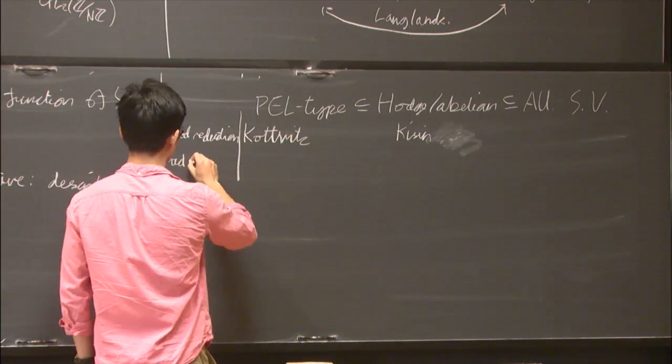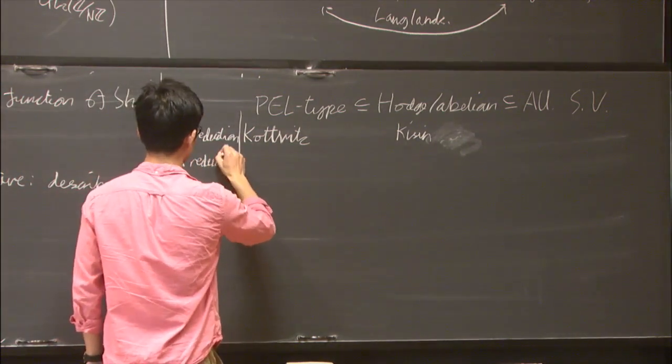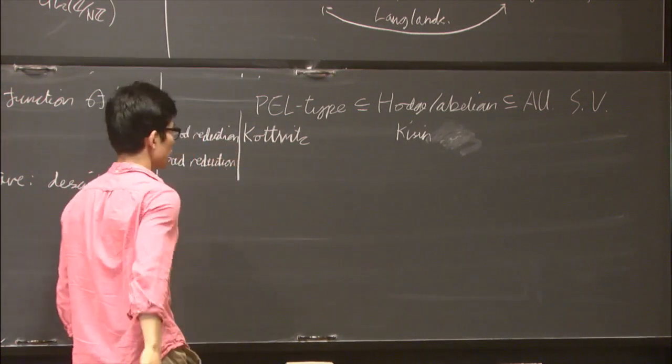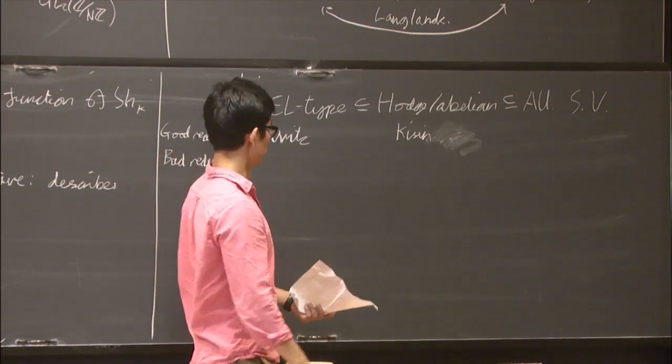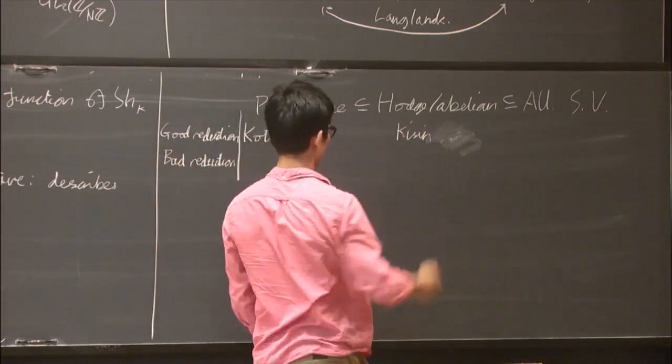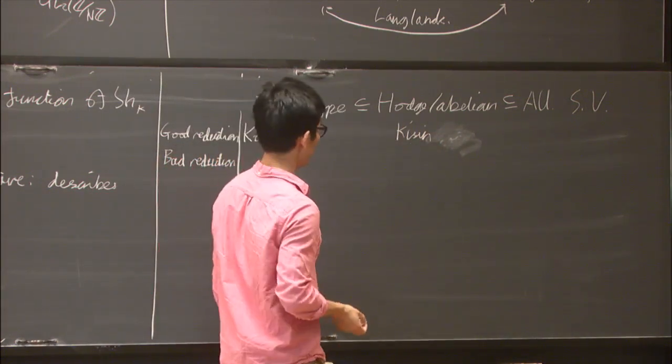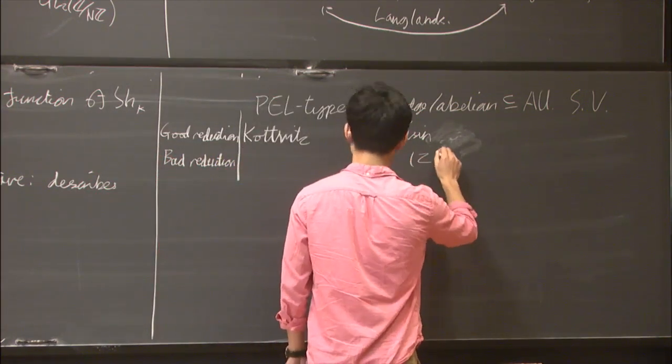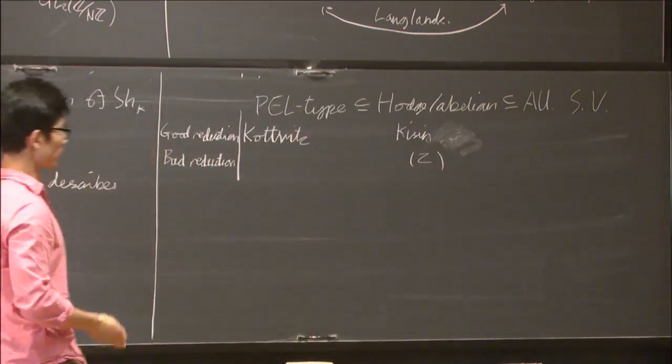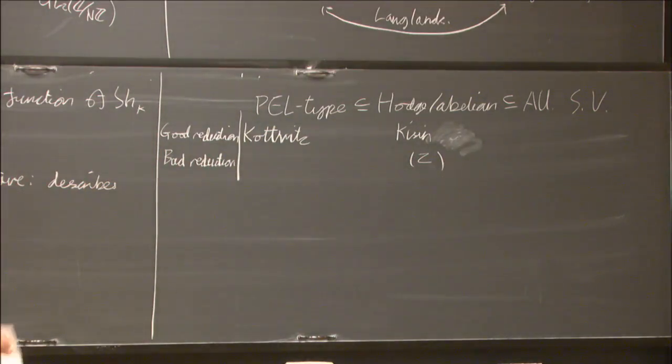In the case of bad reduction, Kisin and Pappas have recently constructed integral models for parahoric level structure for Hodge slash abelian type Shimura varieties. In my thesis I've proved some cases of this conjecture for these Shimura varieties.